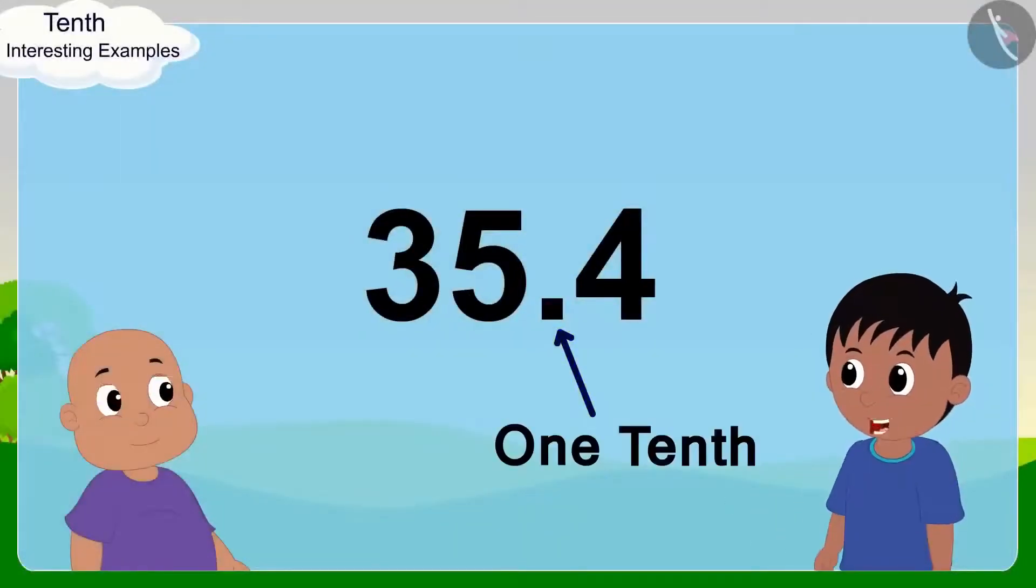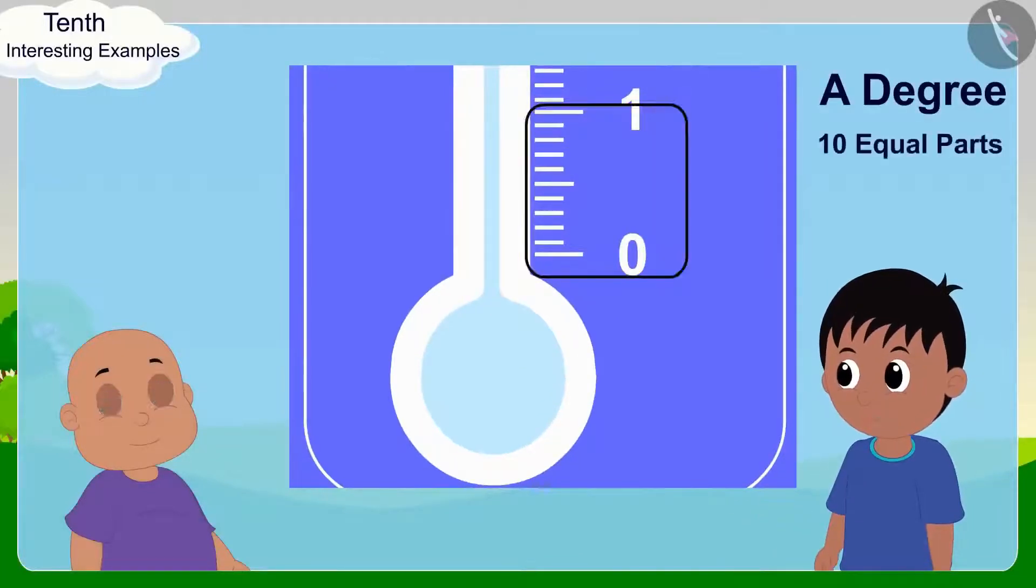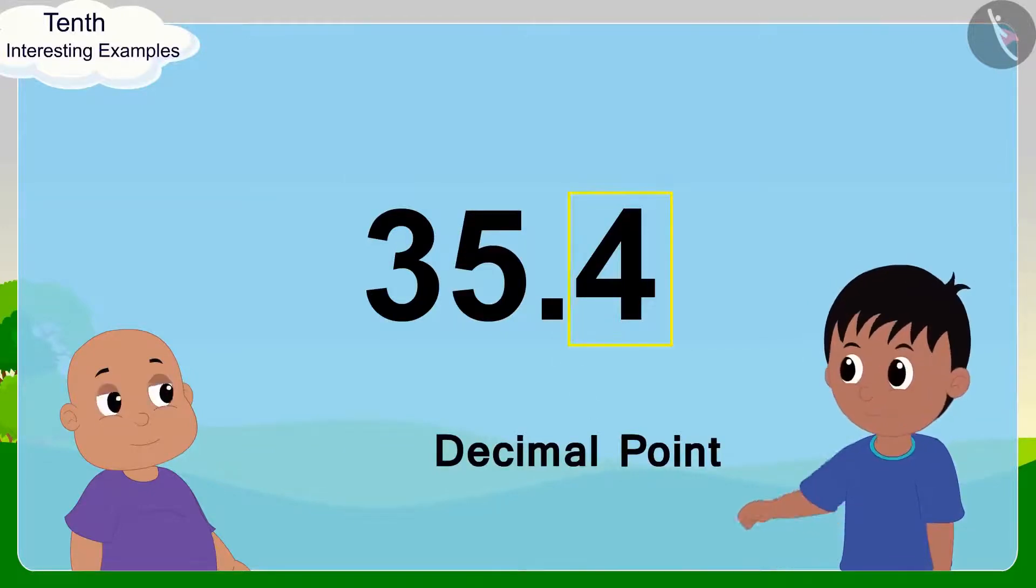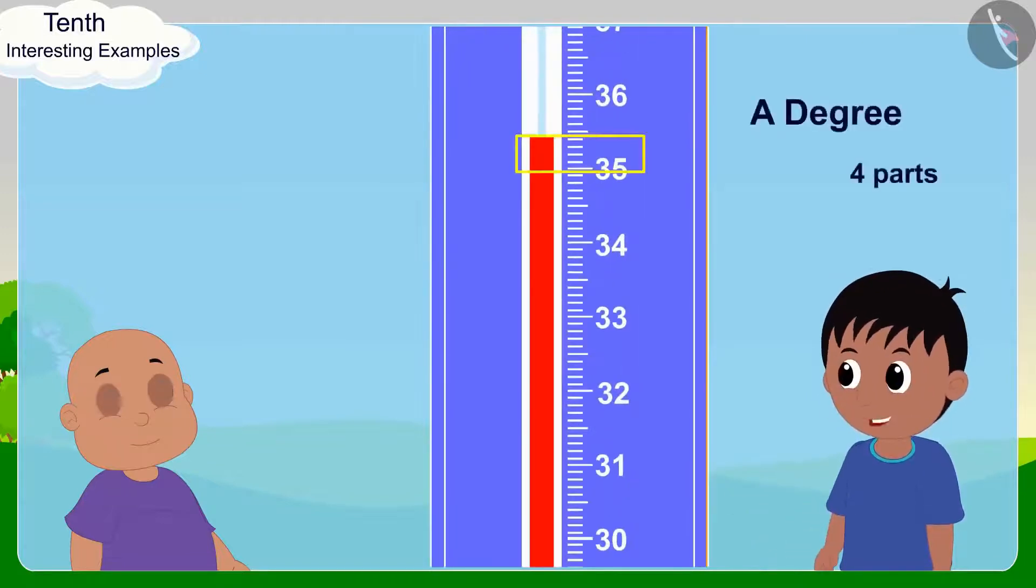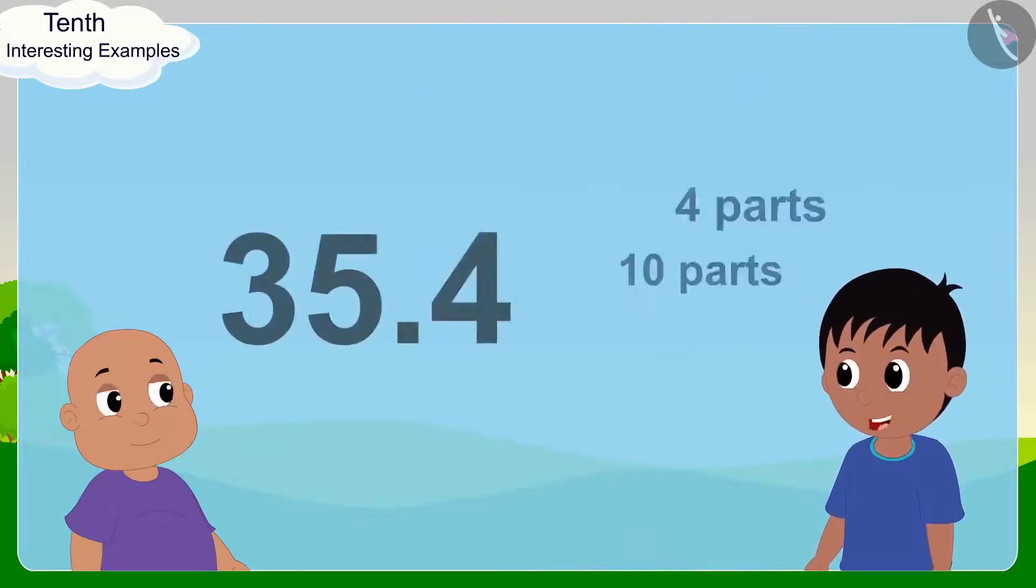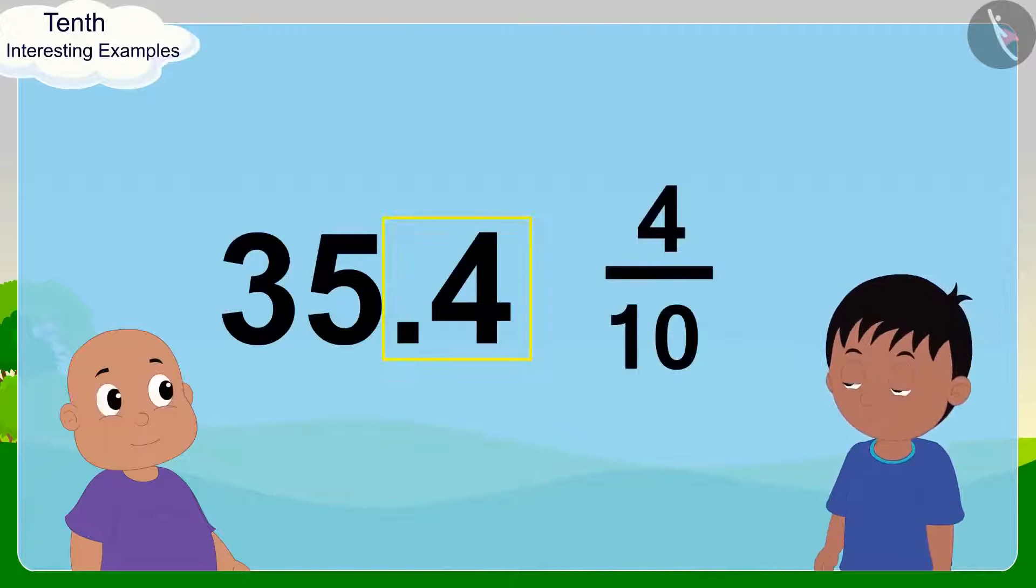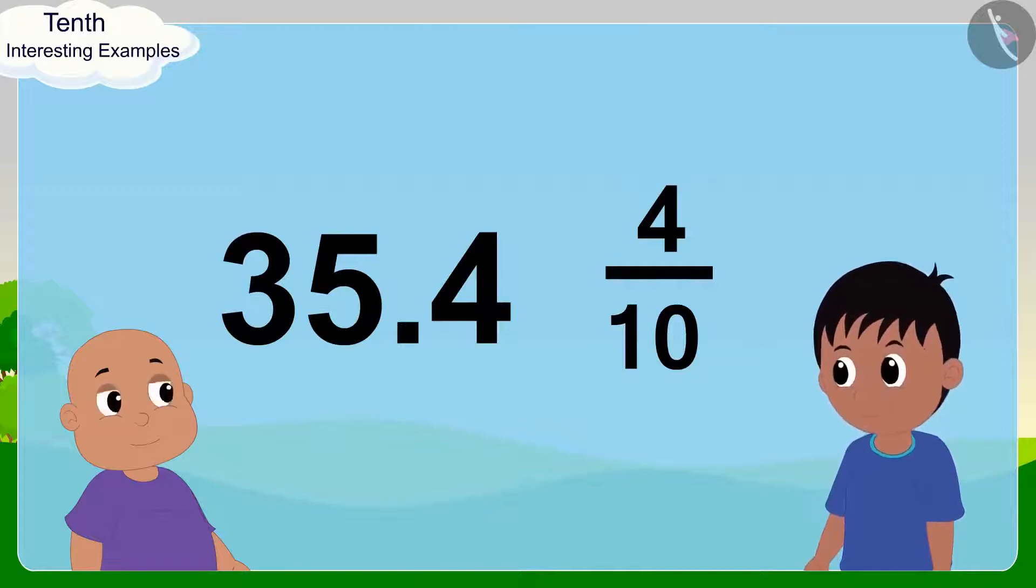1 tenth indicates that a degree is being divided into 10 equal parts. And because the number after the decimal point is 4, we can say that here we are taking 4 out of the 10 parts of a degree. In this way, we can also write 0.4 as 4 tenths in the form of a fraction.